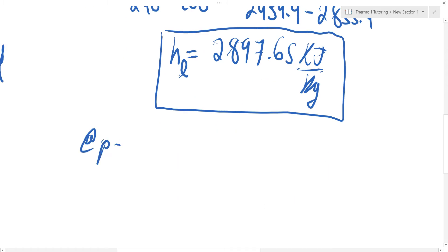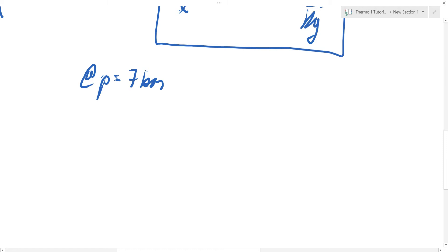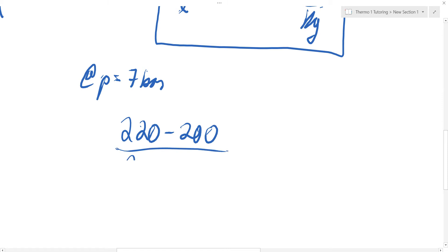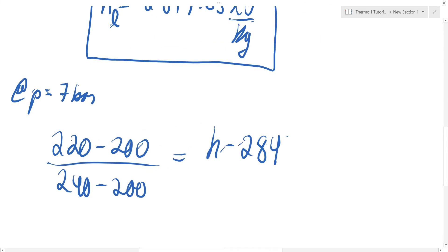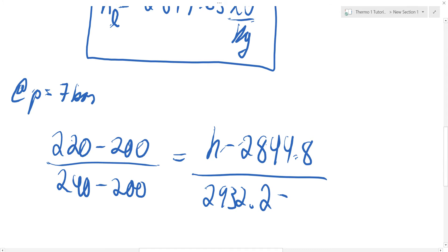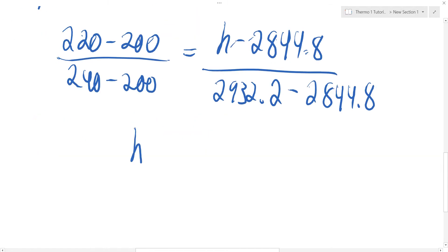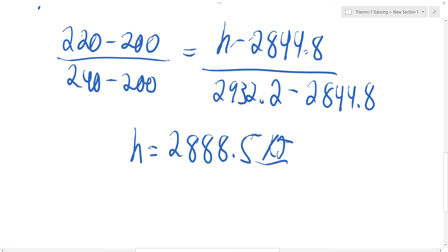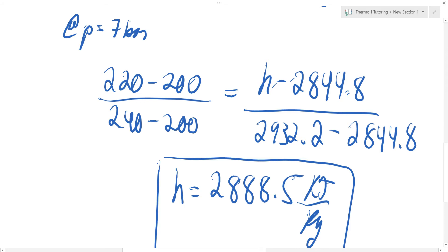Now holding 7 bar as the constant pressure: (220 minus 200) over (240 minus 200) equals (H minus 2,844.8) over (2,932.2 minus 2,844.8). This gives H equal to 2,888.5 kilojoules per kilogram. Since this is evaluated at the upper pressure (7 bar), this is H upper.